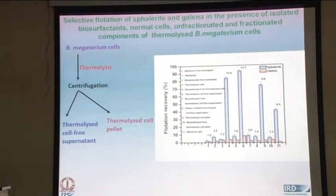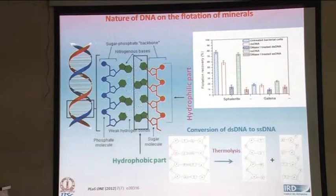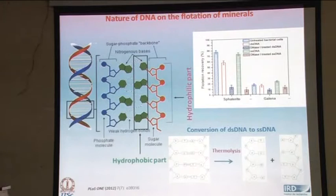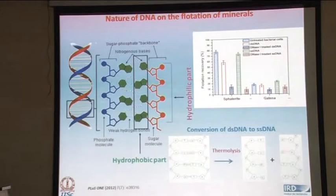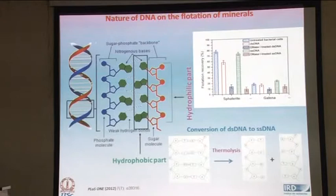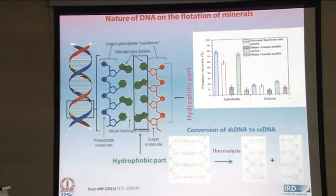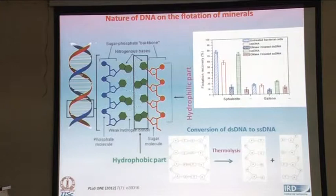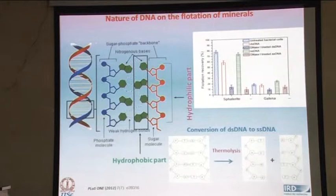To summarize, the DNA molecule is a double-stranded helix with various bases — it has both hydrophilic and hydrophobic parts. Once you do a thermal treatment, the double-stranded DNA is made into single-stranded DNA, as shown diagrammatically here. You can use the single-stranded DNA more efficiently for the flotation process. The flotation recoveries with single-stranded DNA (the green bar) are higher compared to untreated bacterial cells. When treated with DNase, the flotation recoveries decrease, again indicating that DNA plays a vital part in inducing hydrophobicity.